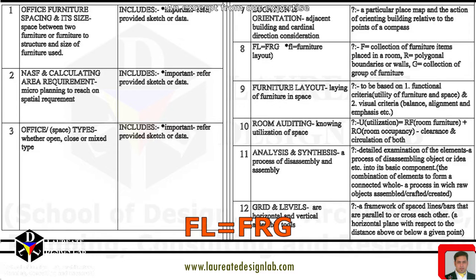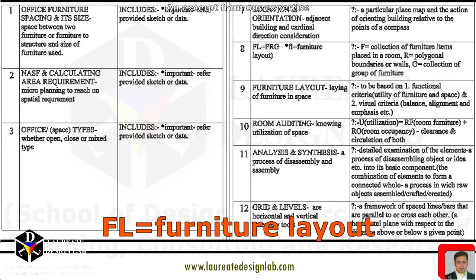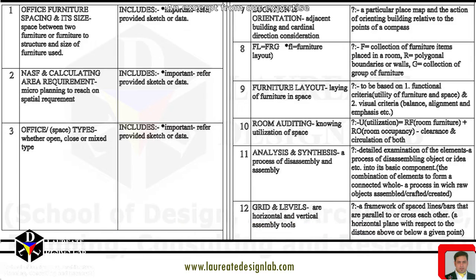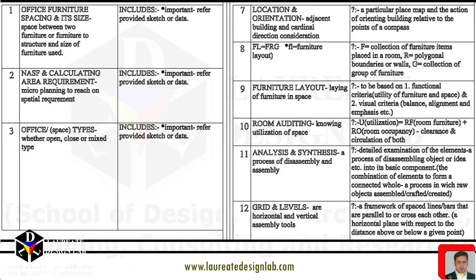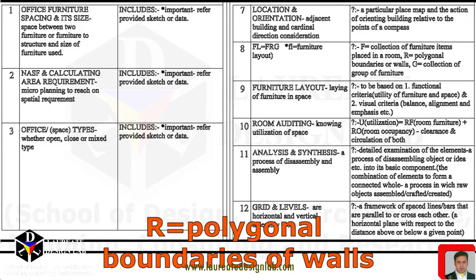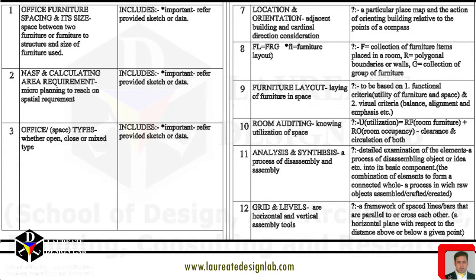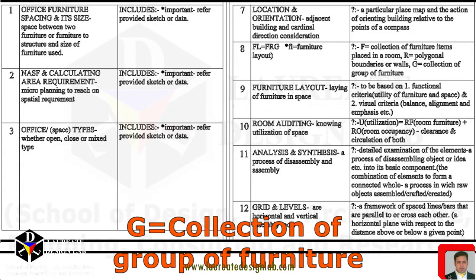FL equals FRG. FL stands for Furniture Layout. F represents the collection of furniture items placed in a room. R represents the polygonal boundaries or walls. G represents the collection of groups of furniture.